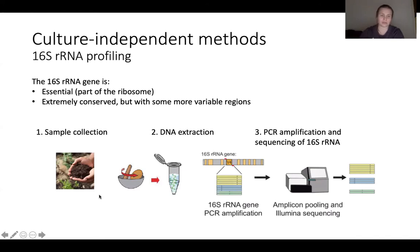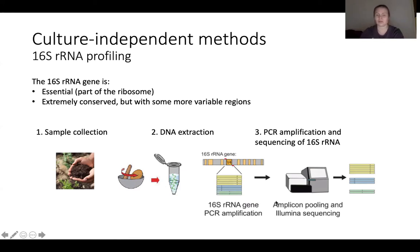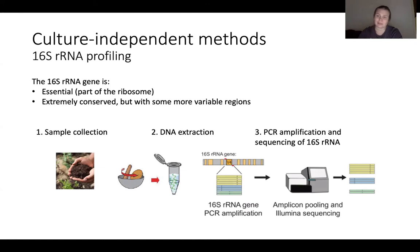The method starts by collecting a sample, then you extract DNA from the bacteria in the sample. Then you do a PCR amplification to amplify a small fragment of the 16S rRNA gene, and then you sequence the PCR product. By doing this, you can get an appreciation of which bacteria were present in the sample and also their relative abundances.